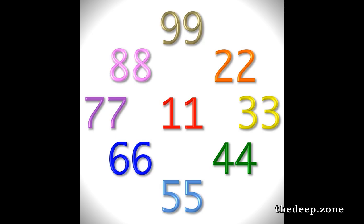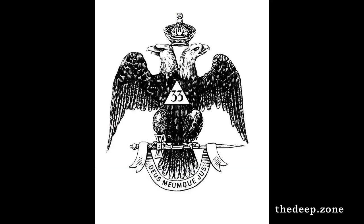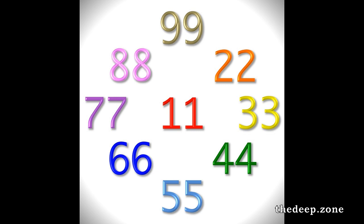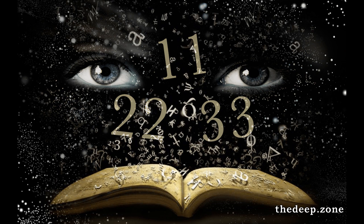In numerology, double-digit letters like 11, 22, 33, 44 on up the line to 99, all those are known in numerology as master numbers because they're multiples of 11, like they're double-digit numbers.